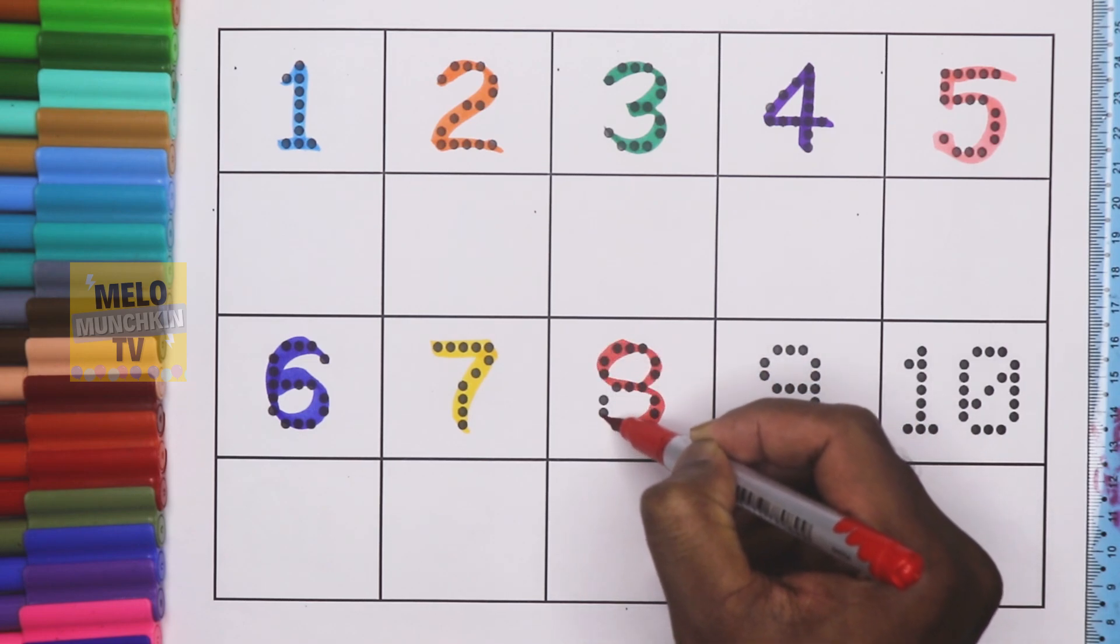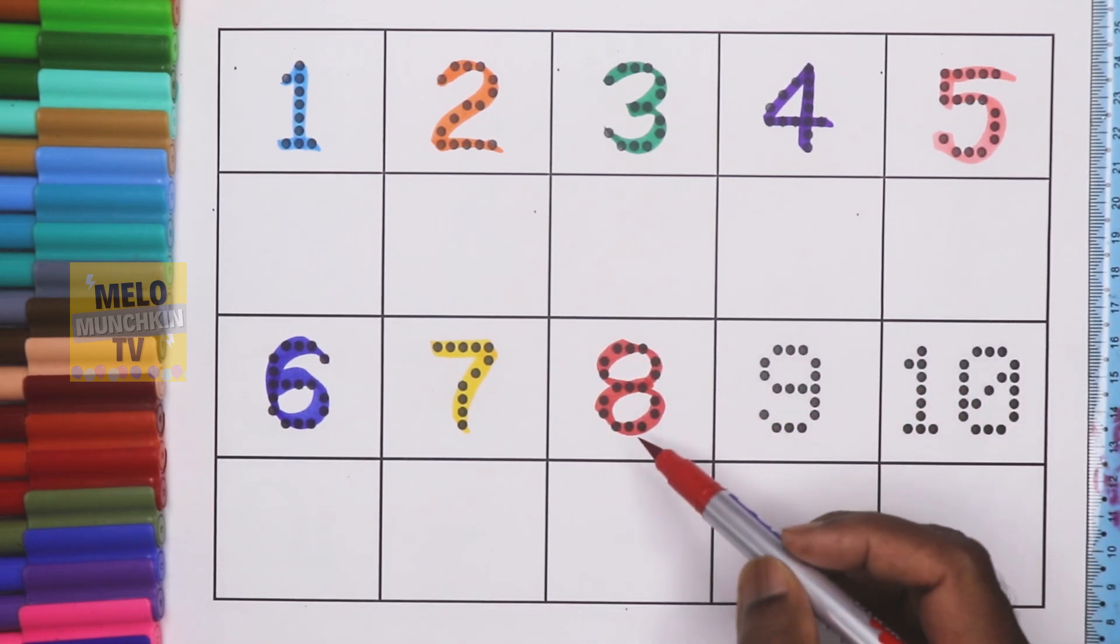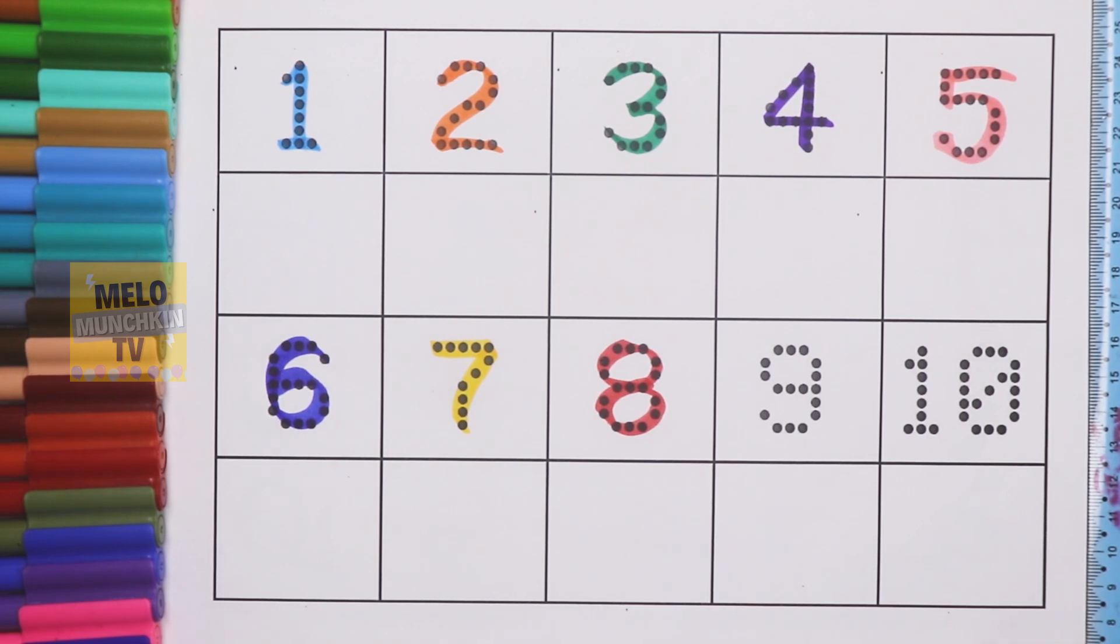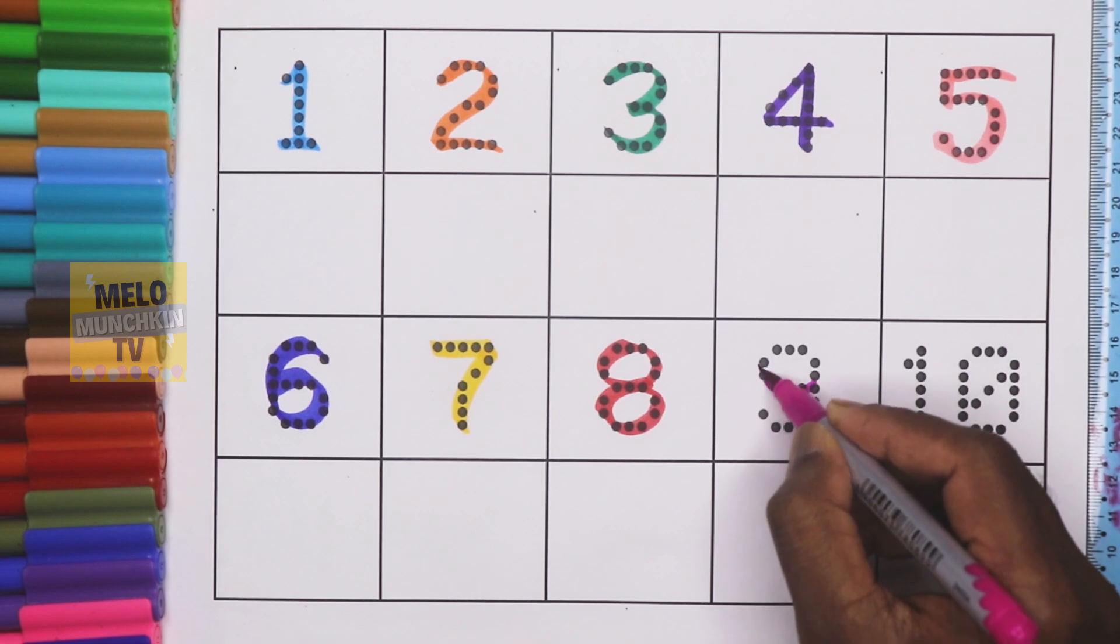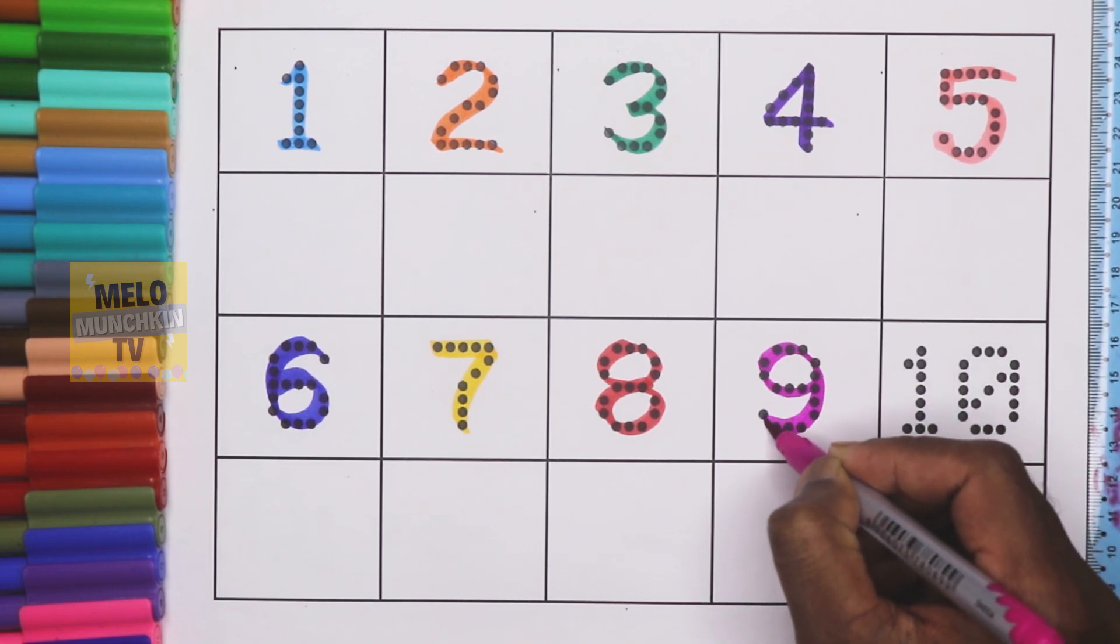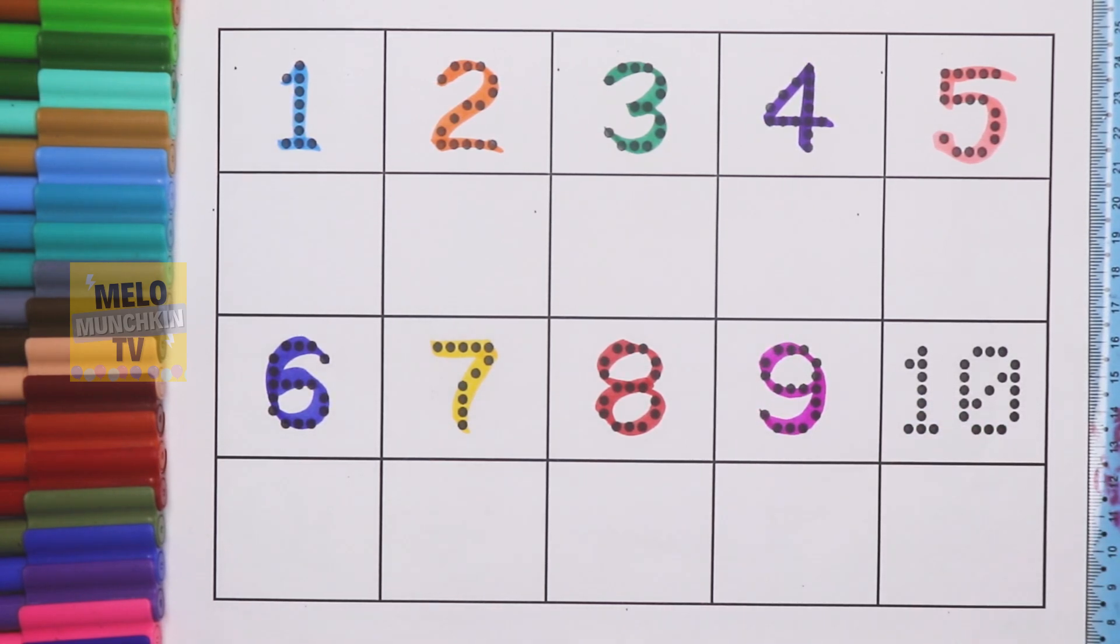Next I'll take pink color to write number 9, N-I-N-E, 9. See, this is number 9. And finally I'll take green color, this is light green color, to write number 10, 1 and 0, 10, T-E-N, 10.